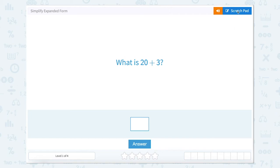Simplify expanded form. What is 20 plus 3? Well, 20 shows two 10s, three 1s. 20 plus 3 is 23.